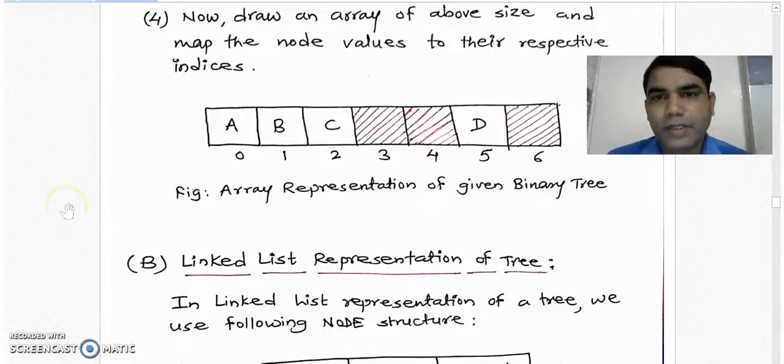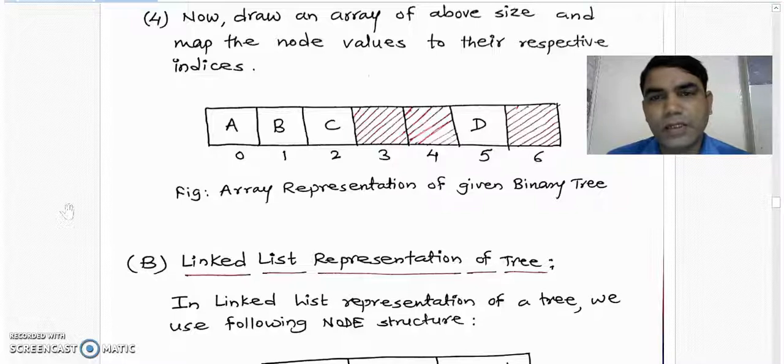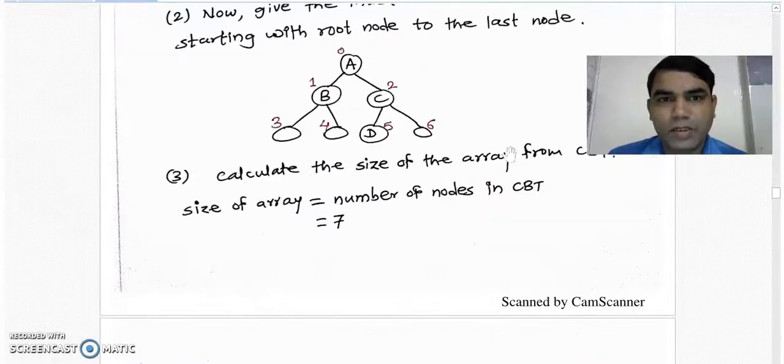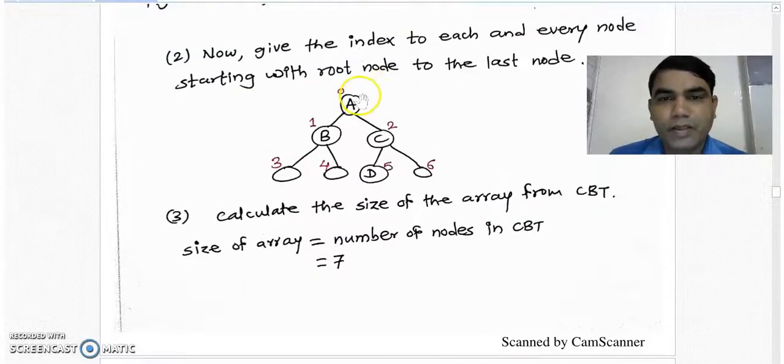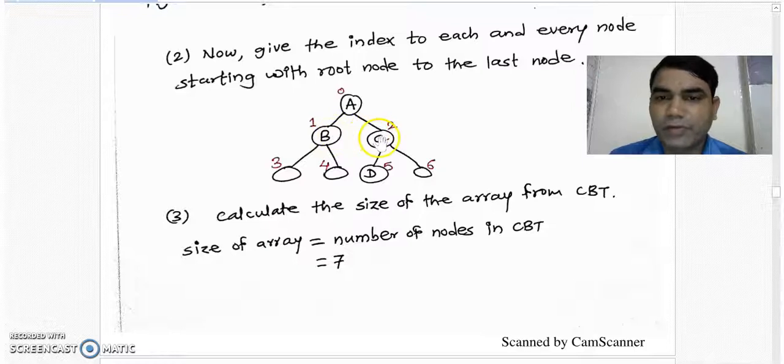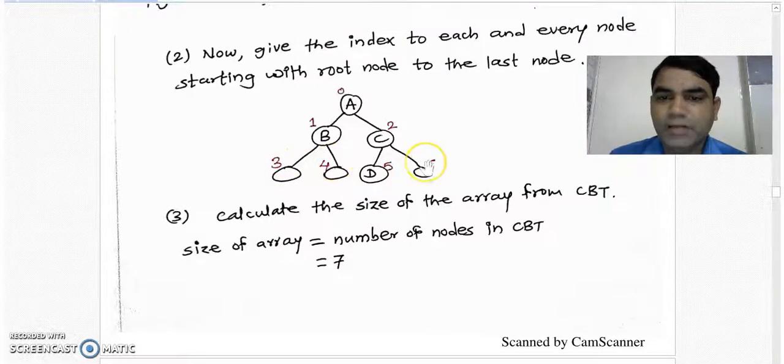Now we draw an array of above size and map the node values to their respective indices in an array. If you see in the above step number 2, A is having index 0. It means it must be mapped in an array at index number 0. Then B will be mapped to 1, C will be mapped to 2 and D will be mapped to 5. Rest of the indices like 3, 4 and 6 will be kept empty.